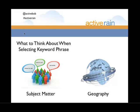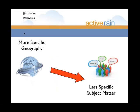When setting out to select a keyword phrase — which really becomes the starting point for our blog post — we want to think in terms of subject matter and geography, because these are the two components that make up most keyword phrases. Every keyword phrase has some component of subject matter. As it relates to real estate, people often anchor the keyword phrase with geography. Generally, we want to get more specific with our geography while having less specific subject matter.